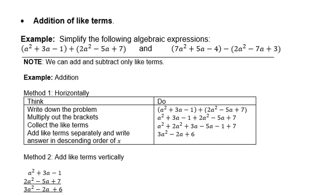Addition of like terms, look at the example: simplify the following algebraic expression. Look at the first one, a squared plus 3a minus 1 plus 2a minus 5a plus 7. If you add, then the signs will not change. You can either look at method 1, where we remove the bracket and then collect the like terms. Or look at method 2, we can write them underneath each other and add like that. You're going to end up in both cases with 3a squared minus 2a plus 6. So you can decide what method works for you.